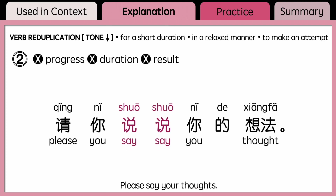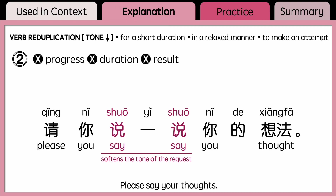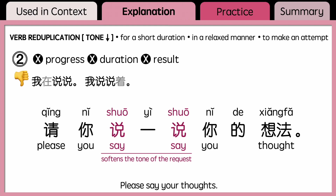For another example, in the sentence 请你说说你的想法, the verb 说 is reduplicated to request someone to express their opinion briefly. By reduplicating 说 into 说说 or 说一说, it softens the tone of the request. Since the action is done for a short duration in a relaxed manner, do not combine it with 在 or 着, do not use a duration word like 一个小时, and do not place complements indicating result such as 完了.